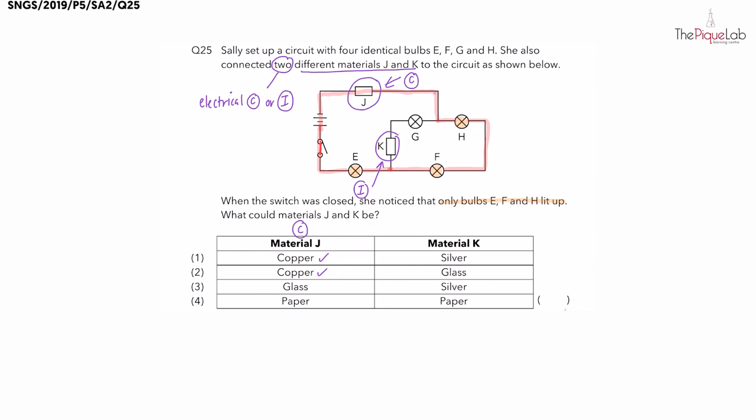Let's match material K now, which is the electrical insulator. Can I choose silver for my answer? Silver is a metal and metals are electrical conductors. So we are only left with either glass or paper, giving us the answer as option number 2.